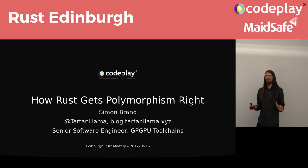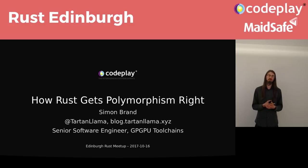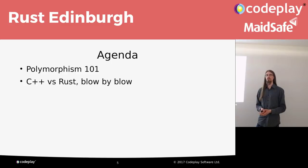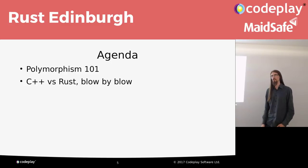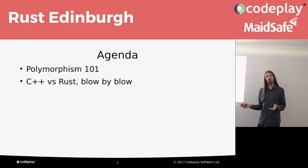If you aren't too comfortable with some of the concepts, just ask me a question. Feel free to stop me at any point. I work at Codeplay which is based here. I work on compiler backends. We do heterogeneous systems tools for things like GPUs and DSPs. My agenda today: I'm going to give a brief overview of different types of polymorphism, then do a blow-by-blow comparison of C++ and Rust's approaches to polymorphism.